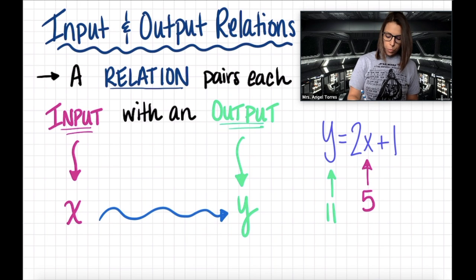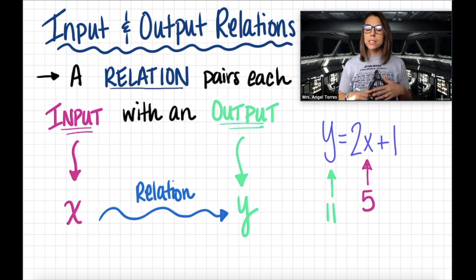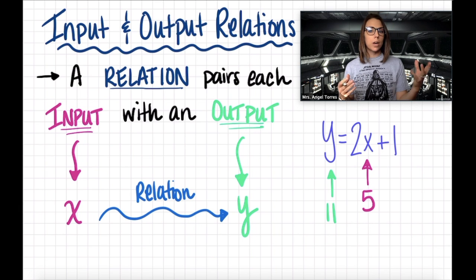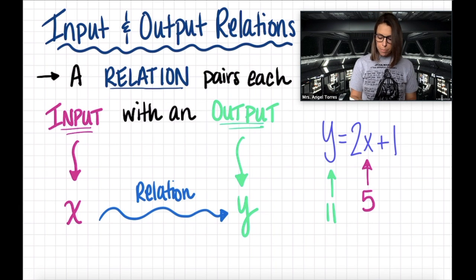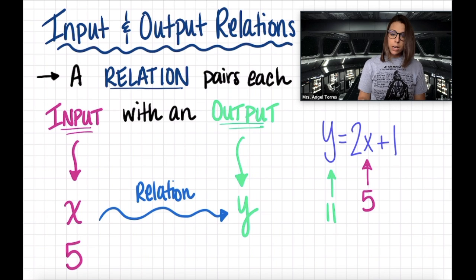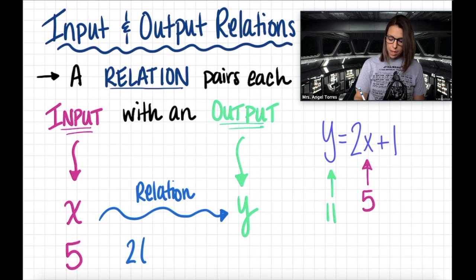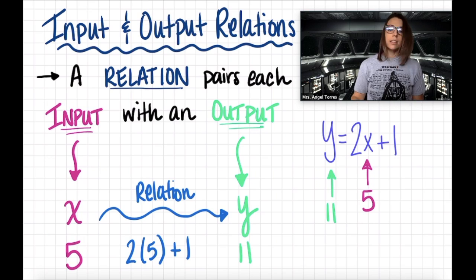What happens between the input and output is called the relation. The reason why these are related is going to change based on the function you're looking at — linear, quadratic, exponential, etc. In our example, we chose to input 5, our relation was to multiply by 2 and then add 1, and then we had our output of 11.